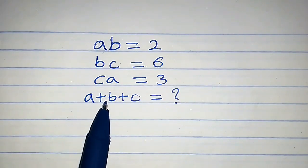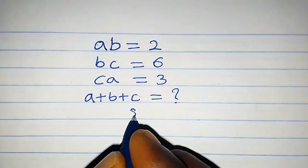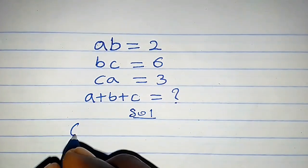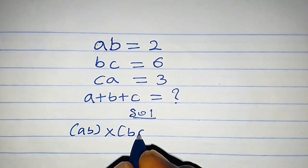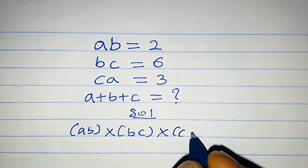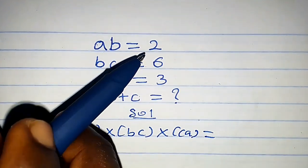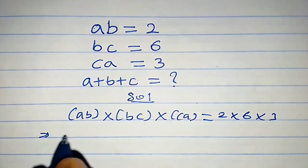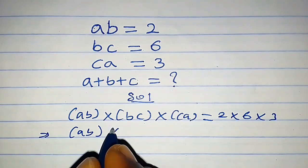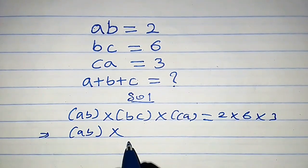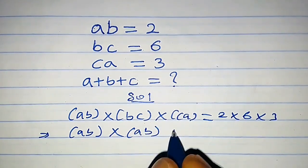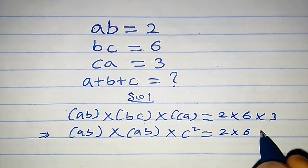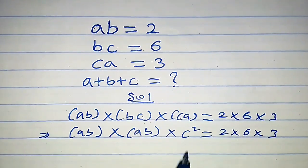How do we find the value of a plus b plus c? Let's multiply the left-hand side together: ab times bc times ca equals the right-hand side 2 times 6 times 3. This implies a²b²c² equals 2 times 6 times 3.